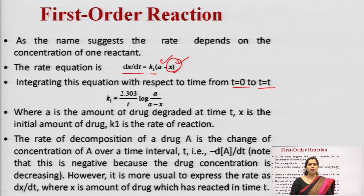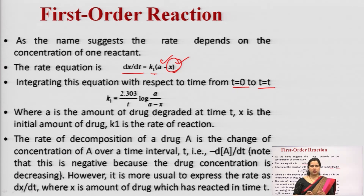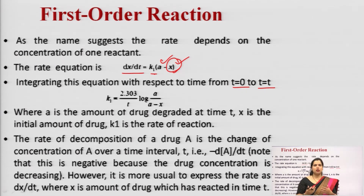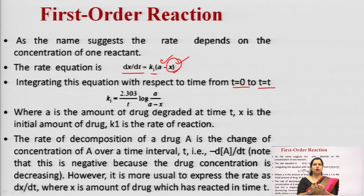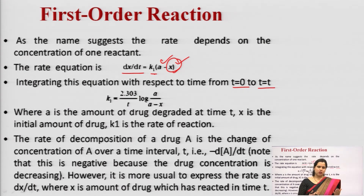The rate of decomposition of a drug A is the change in concentration of A over a time interval t, expressed as -d[A]/dt. Note that this is a negative value because the drug concentration is decreasing — the drug is degrading from its pure form. The negative sign represents decomposition as time increases. It is more usual to express the rate as dx/dt, where x is the amount of drug which has reacted in time t — x represents the concentration or amount of drug.